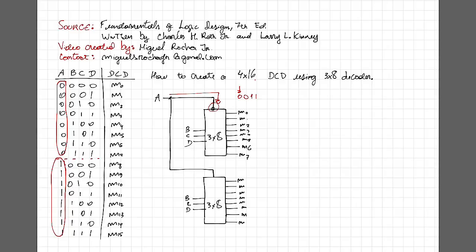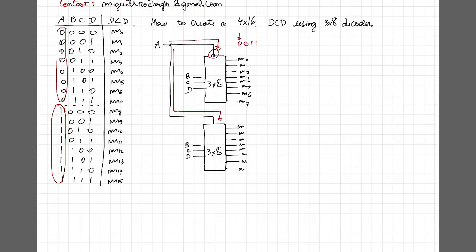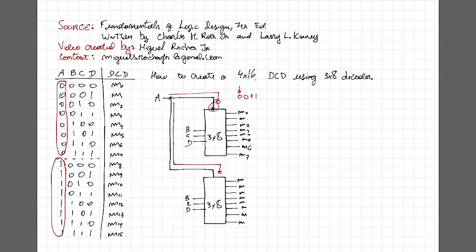If we have 0011, which is three, A is equal to zero, and then this A is going to be inputted into the first decoder, but before this, this bubble is going to invert it, and this first decoder is going to be active, while the other one is going to receive A equal to zero, and then the second decoder will be inactive for this specific combination.